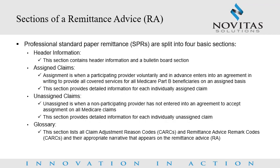The third section is unassigned claims. Unassigned is when a non-participating provider has not entered into an agreement to accept assignment on all Medicare claims. This section provides detailed information for each individually unassigned claim. And lastly, the glossary, which lists all claim adjustment reason codes and remittance advice remark codes and their appropriate narrative that appears on the remittance advice.